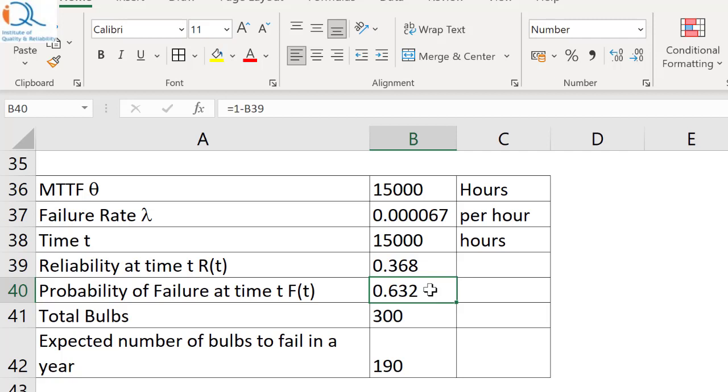In simple words, we can say that 63.2% items are expected to fail by time is equal to MTTF. Note that it is not 50%, it is 63.2%.